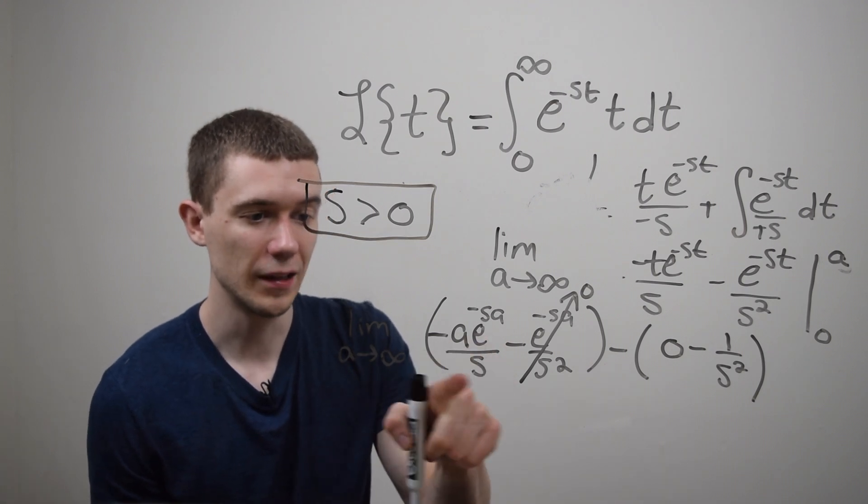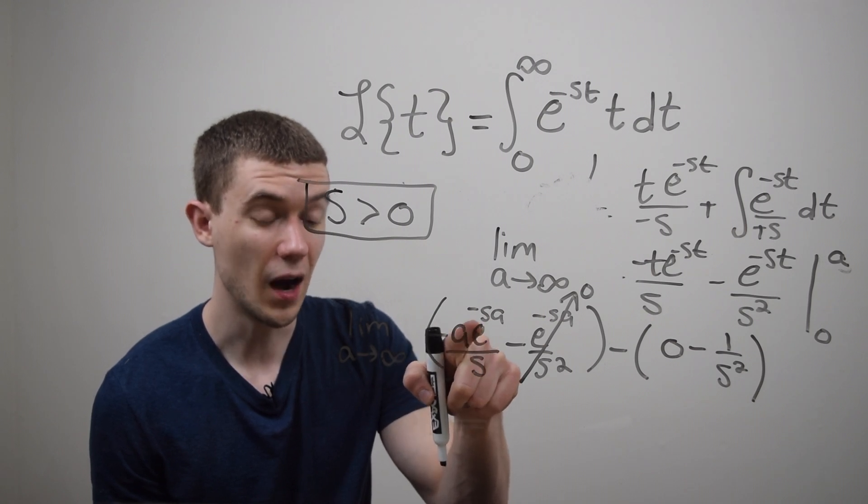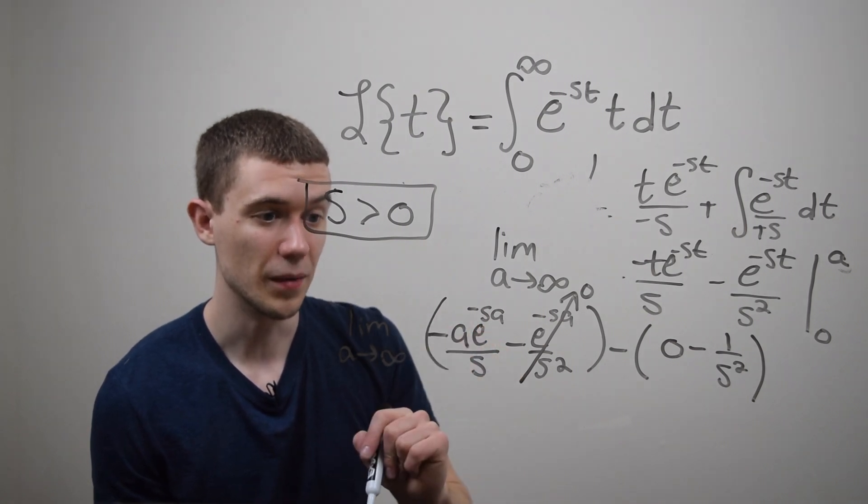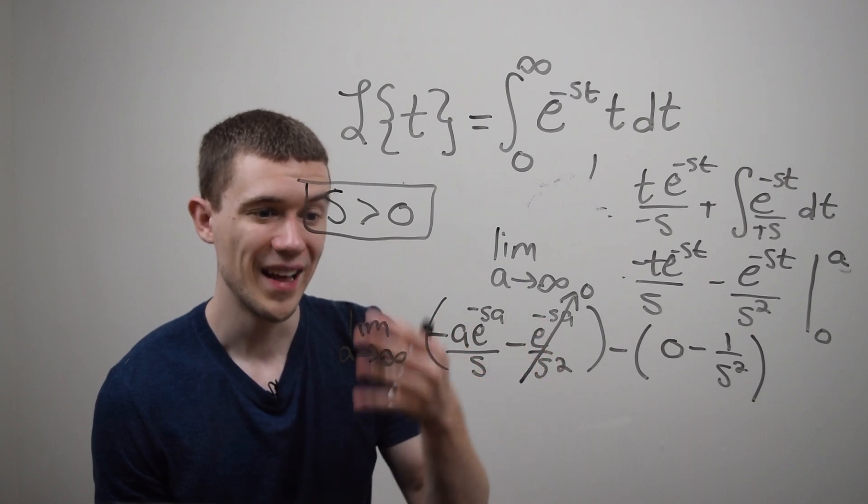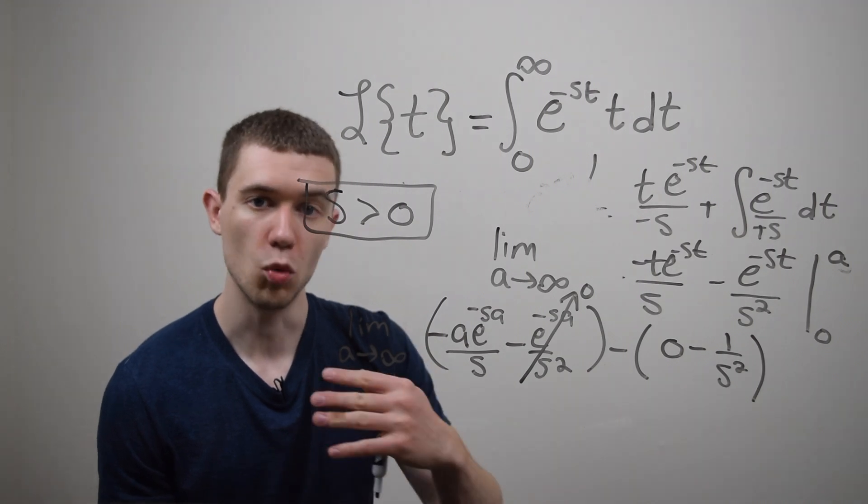This problem is a little bit trickier because I'm getting minus infinity times e to the minus infinity which is zero. That's an indeterminate form.